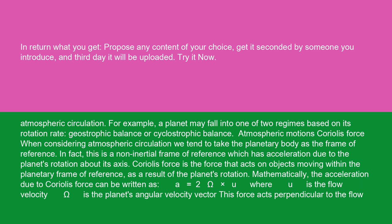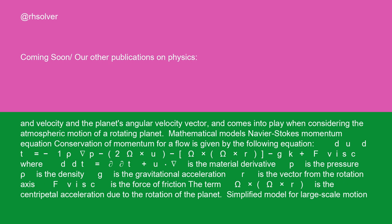Coriolis force is the force that acts on objects moving within the planetary frame of reference as a result of the planet's rotation. Mathematically, the acceleration due to Coriolis force can be written as a = 2Ω × u, where u is the flow velocity and Ω is the planet's angular velocity vector. This force acts perpendicular to the flow velocity and the planet's angular velocity vector and comes into play when considering the atmospheric motion of a rotating planet.